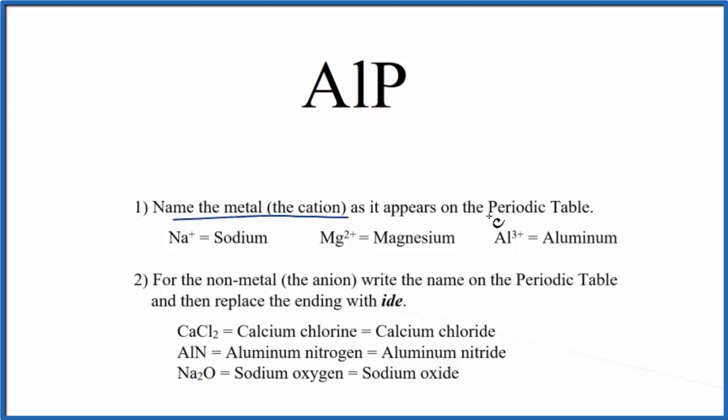First, we write the name for the metal as it appears on the periodic table. So AL, that's the metal, so we write aluminum.